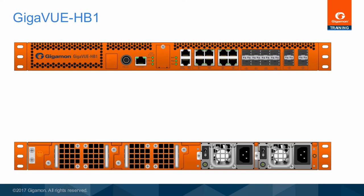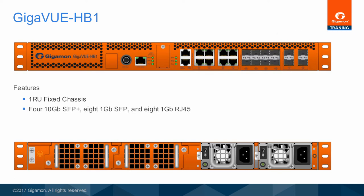The Gigaview HB1 is architecturally a member of the H-Series Visibility Fabric and supports the same look, feel, and feature set. The Gigaview HB1 offers a very small footprint — only one rack unit high — supporting line rate traffic flow across all ports. A highly flexible but fixed configuration offers four 10-gigabit SFP+, eight 1-gigabit SFP, and eight 1-gigabit RJ45, for a total of 16 1-gigabit ports.